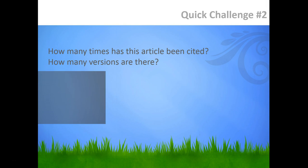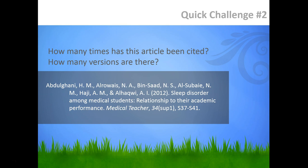Let's test your skills. Do you still have the article you searched for loaded in your browser? See if you can figure out how many times the article has been cited and how many versions there are. Pause this tutorial while you check. As of the date of this recording, November 21, 2015, this article has been cited 31 times and there are eight versions. Depending on when you are watching this tutorial, these numbers may increase.